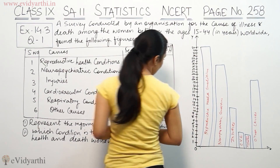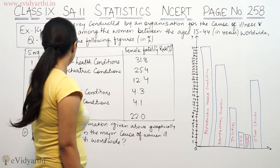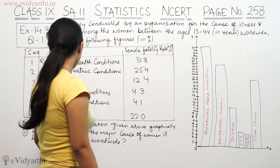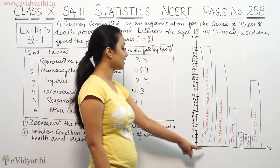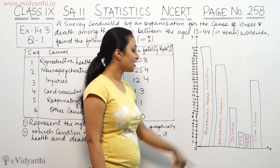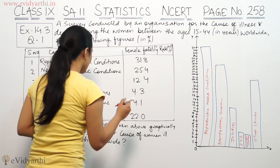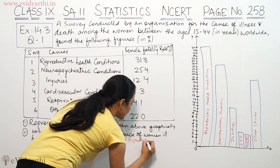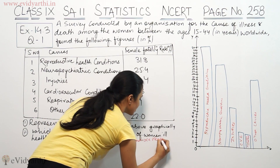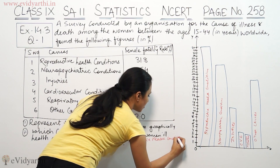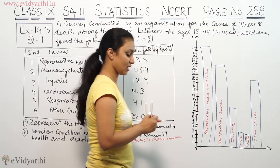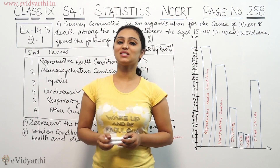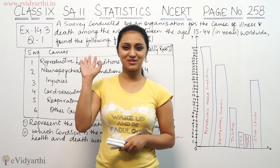So this is the bar graph of this data. Now the question asks which condition is the major cause of women's illness and death worldwide. The major cause is reproductive health conditions — that is the answer. Reproductive health conditions are the major cause. So this was question number one, exercise 14.3. Do watch the next video for more questions. Goodbye.